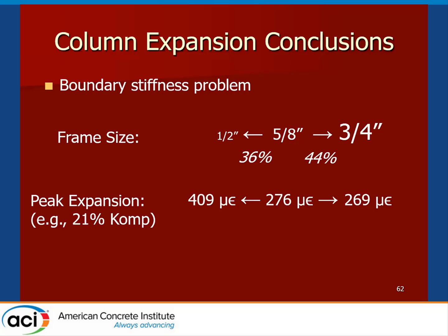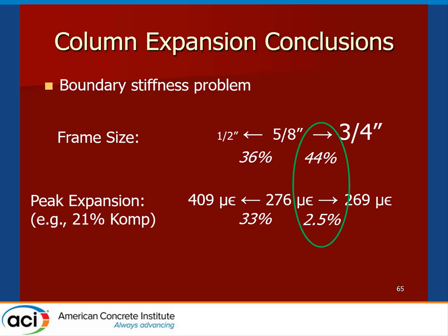For example, on the 21% component mix design, we saw 276 microstrain expansion on the 5/8-inch restraint, about 269 on the 3/4-inch, and 409 on the 1/2-inch — corresponding to about a 33% increase in max expansion for the lowest stiffness, but only a 2.5% decrease in expansion for the highest stiffness. Although expansion increased proportionally with decreasing restraint stiffness, a significant increase in restraint stiffness did not harm the ability to shrinkage compensate.